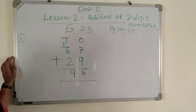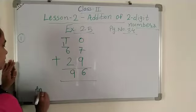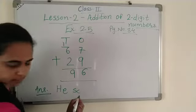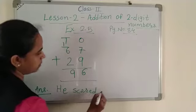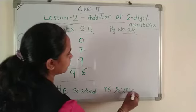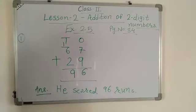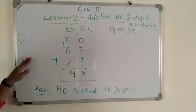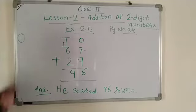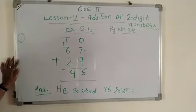Write the answer. How many runs did he score? He scored 96 runs. In the cricket match, Ramesh scored 96 runs in 2 innings. This is problem number 1.